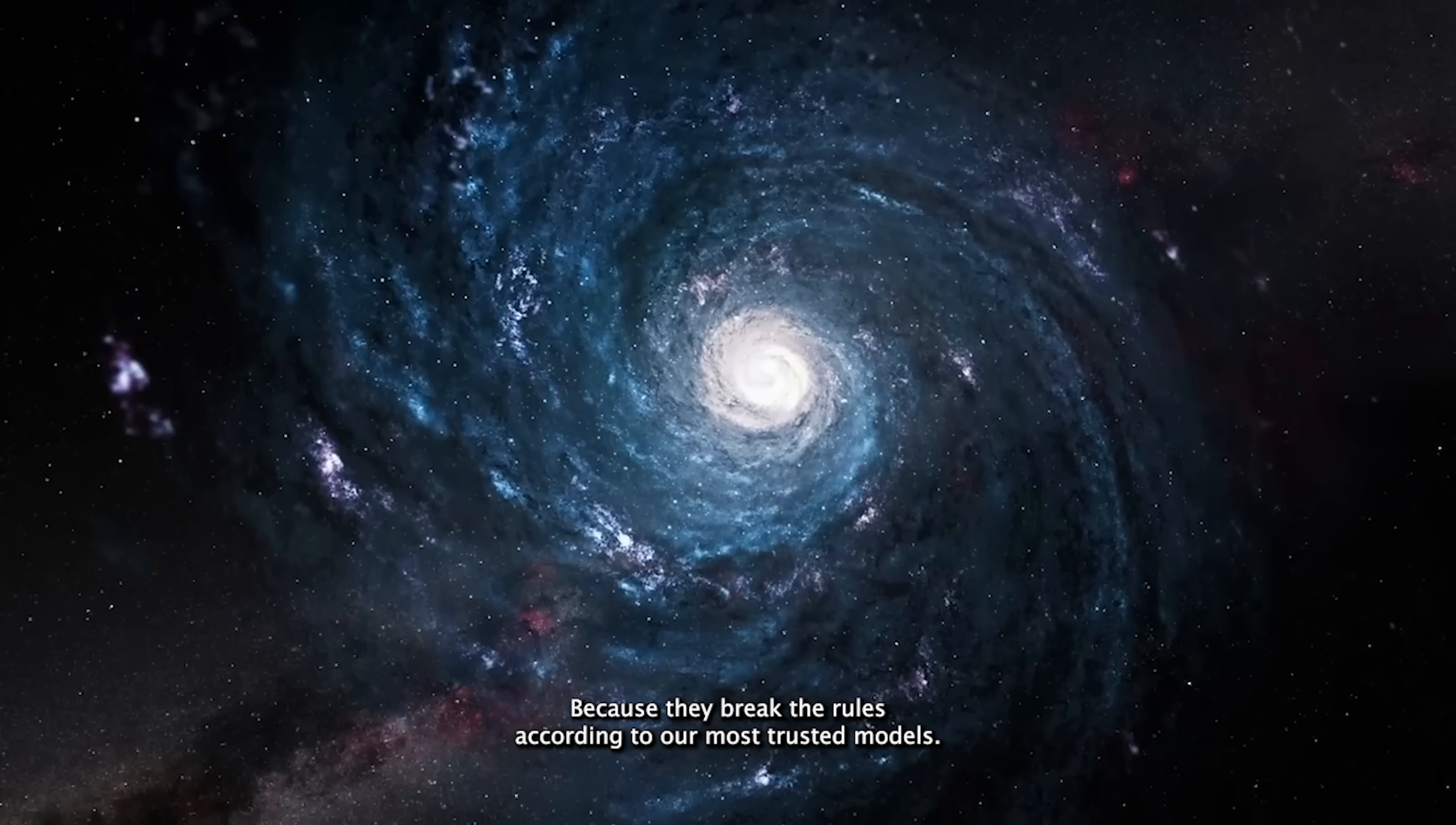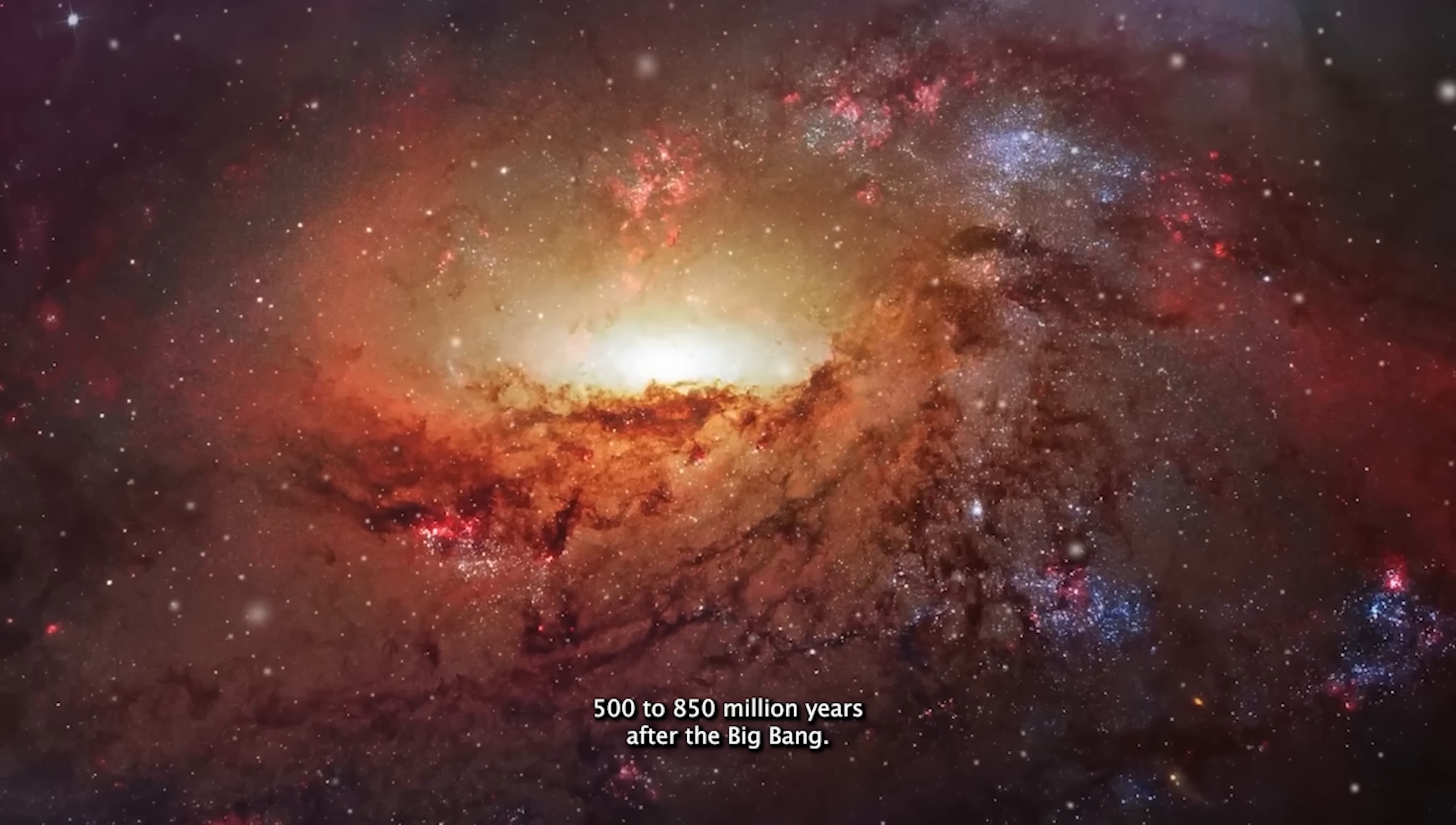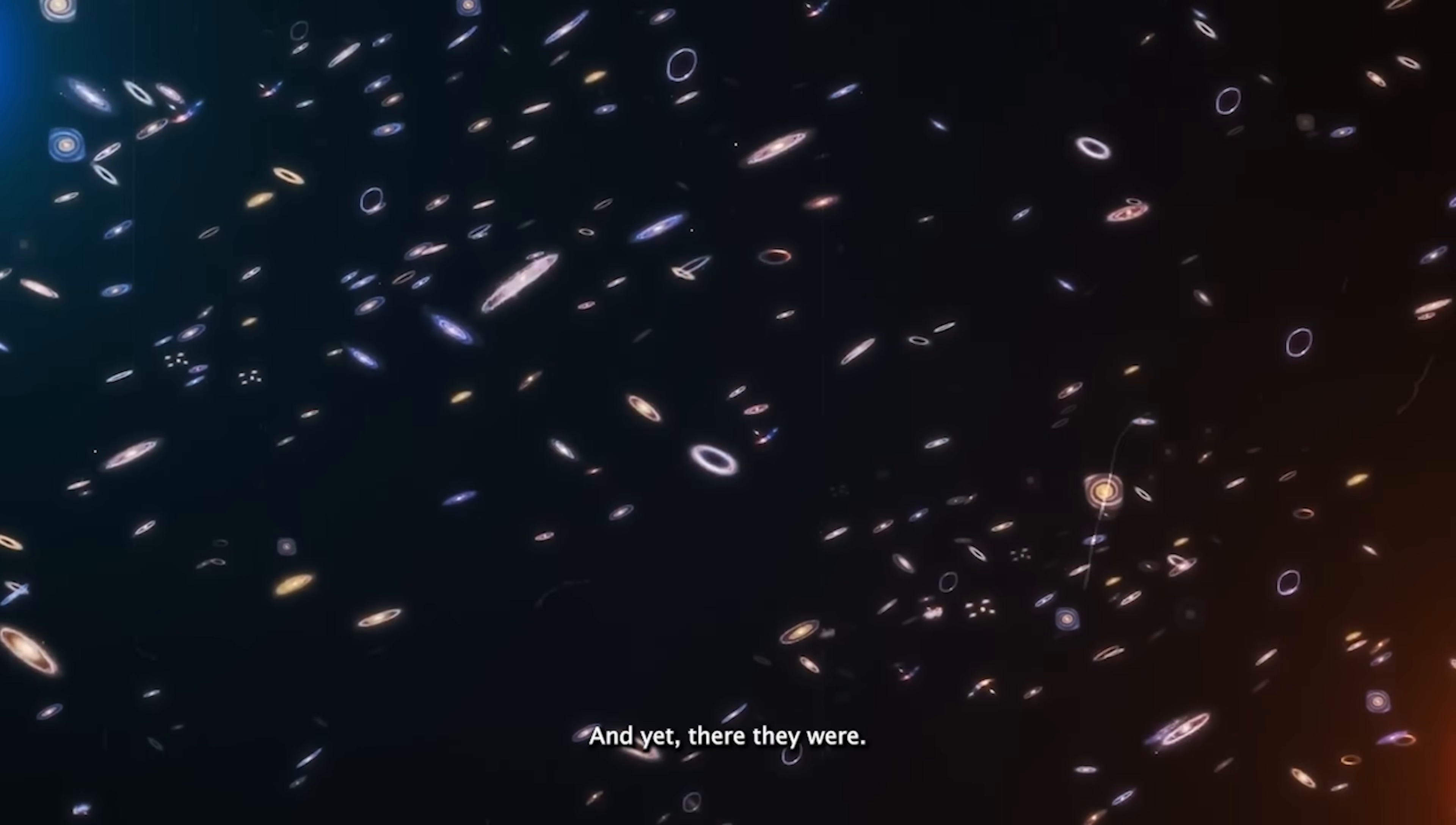According to our most trusted models, galaxies like these should have taken billions of years to form. In theory, only small, dim dwarf galaxies should have existed 500 to 850 million years after the Big Bang. There simply shouldn't have been enough regular matter—atoms, gas, dust—to form giants resembling modern galaxies. And yet, there they were.